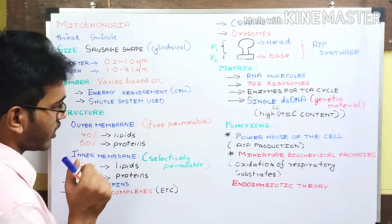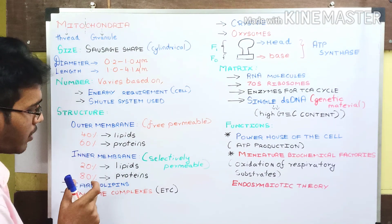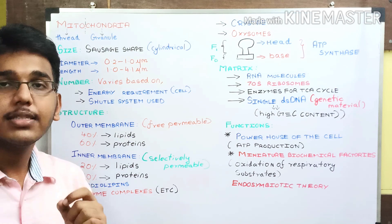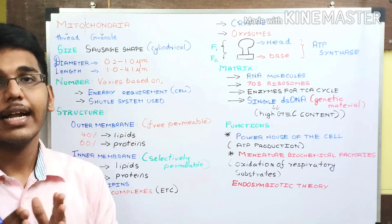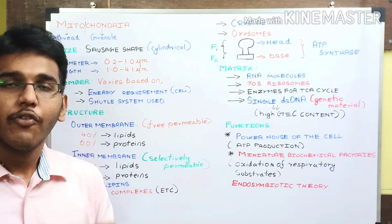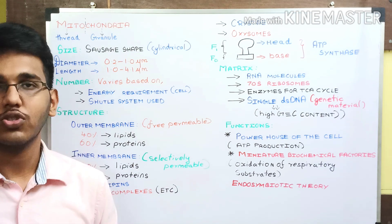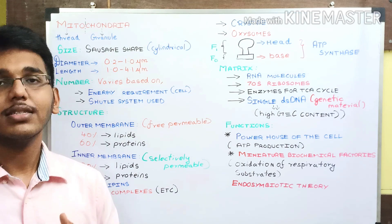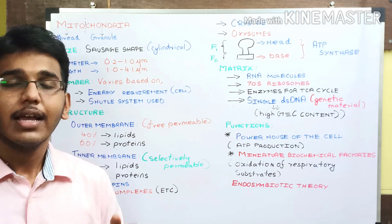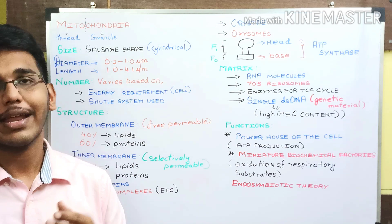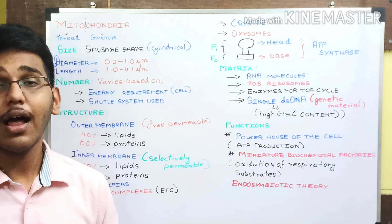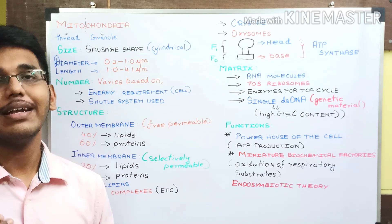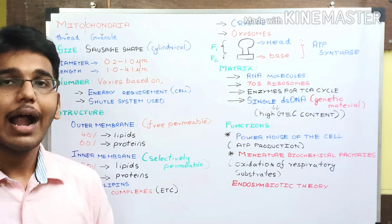The inner membrane of mitochondria is composed of 20% lipids and 80% proteins. As a result of this composition, the inner mitochondrial membrane is selectively permeable — it allows only very few molecules to pass through. For example, ATP and NADH molecules cannot cross the inner mitochondrial membrane. This is why the shuttle system is used for NADH regeneration, and the ATP translocase enzyme is used for ATP transport between mitochondria and the cytosol.